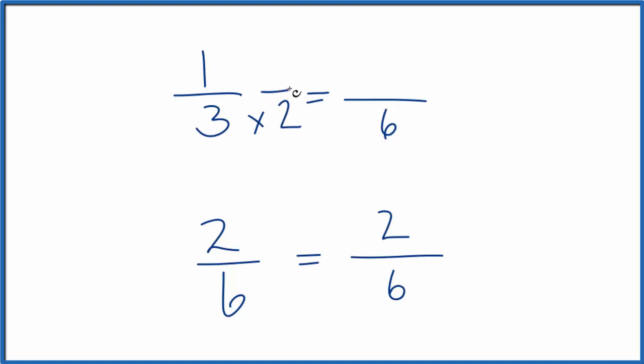But I can't just multiply the bottom. I've got to multiply the top by two as well. Two times two, that's one. So I haven't really changed the quantity, just the way we represent it. So one times two is two over six, two-sixths. One-third is equal to two-sixths.